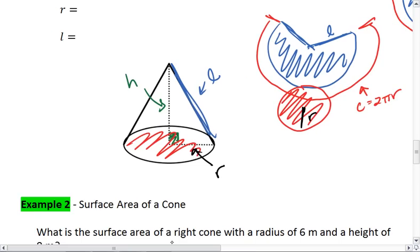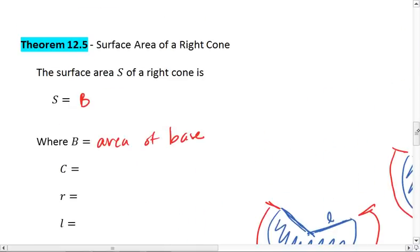Thus, my blue area here is πrl. So we take the base plus πrl, where C is our circumference, r is our radius, and l is our slant height.